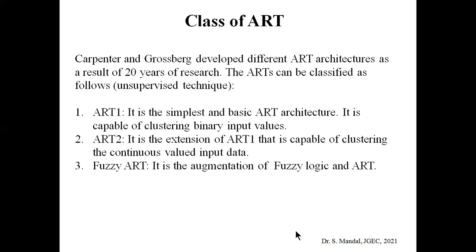Coming to the next slide — the classes of ART. Carpenter and Grossberg developed different ART architectures over at least 20 years of research. The unsupervised ART networks can be classified as follows: ART1 is the simple and basic ART architecture capable of clustering binary input values. ART2 is the extension of ART1 and deals with continuous-valued input data. The basic difference is that ART1 handles binary input patterns and ART2 handles continuous input values.